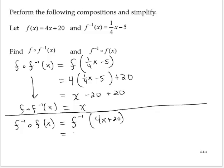And so f inverse says take 1 fourth of the quantity and subtract 5. Now in this case, the quantity is 4x plus 20. Applying the distributive property, 1 fourth of 4x is x, plus 5 minus 5 is x.